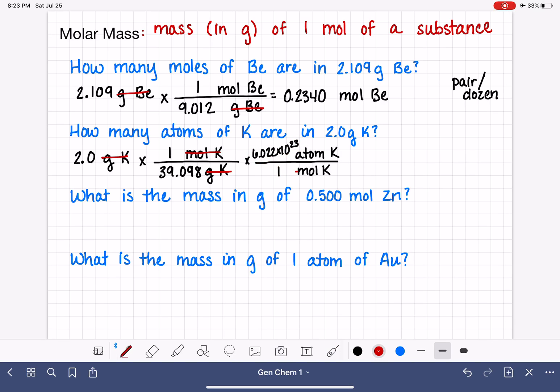One mole is 6.022 times 10 to the 23rd. That cancels out our units of moles of potassium, and we're going to be left with the units of atoms of potassium. We'll come back and do the math on that after we get the other one set up.